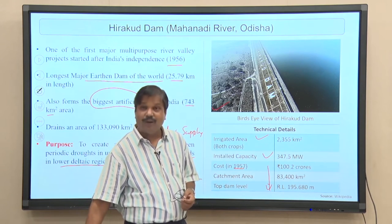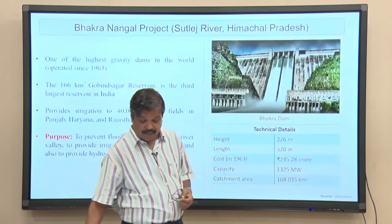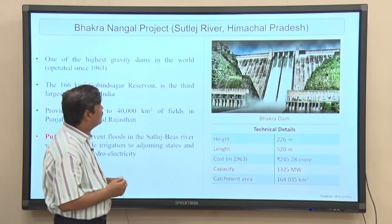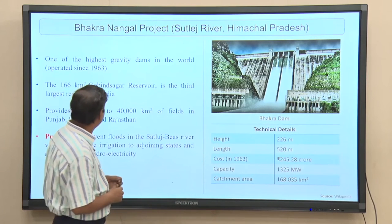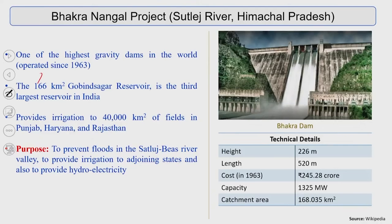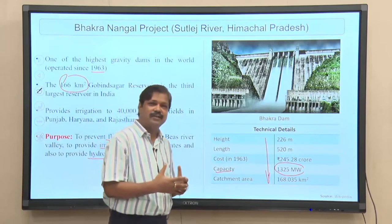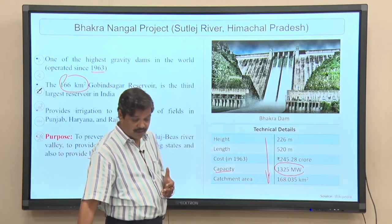The Bhagra Nangal project has a reservoir of 166 square kilometres, constructed around 1963 to prevent floods, provide irrigation, and generate hydropower. These projects represent the significant river interventions India has made.